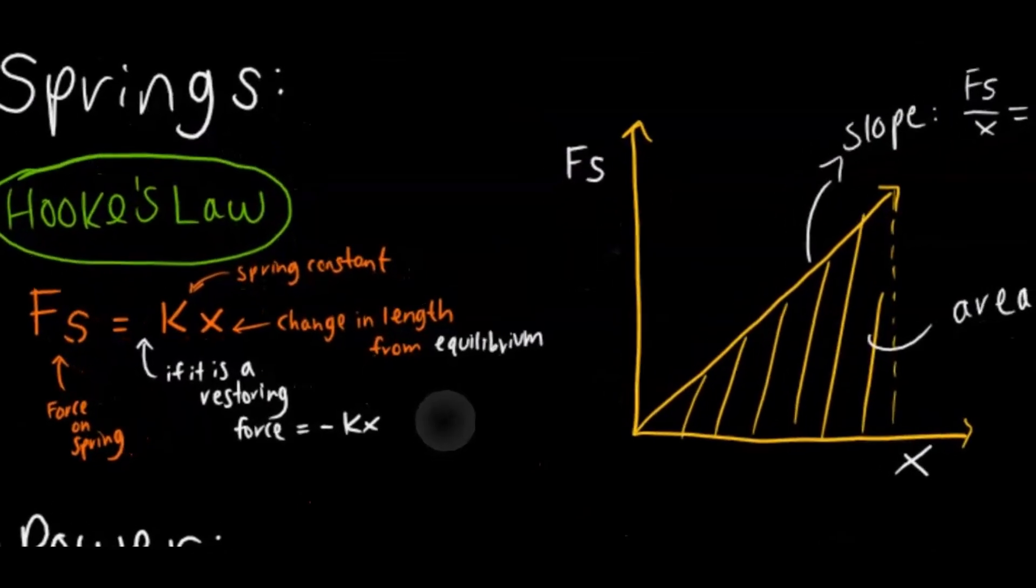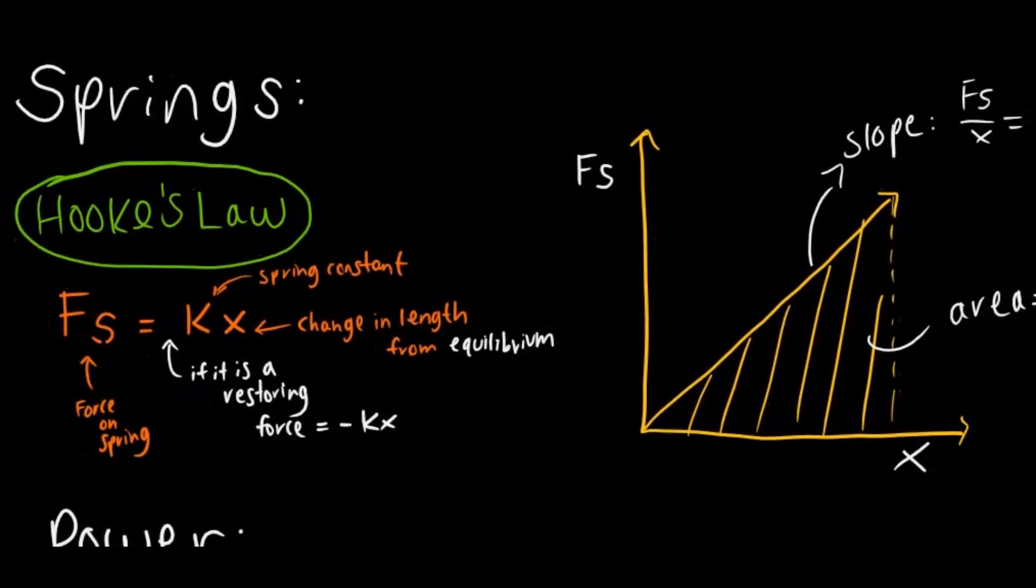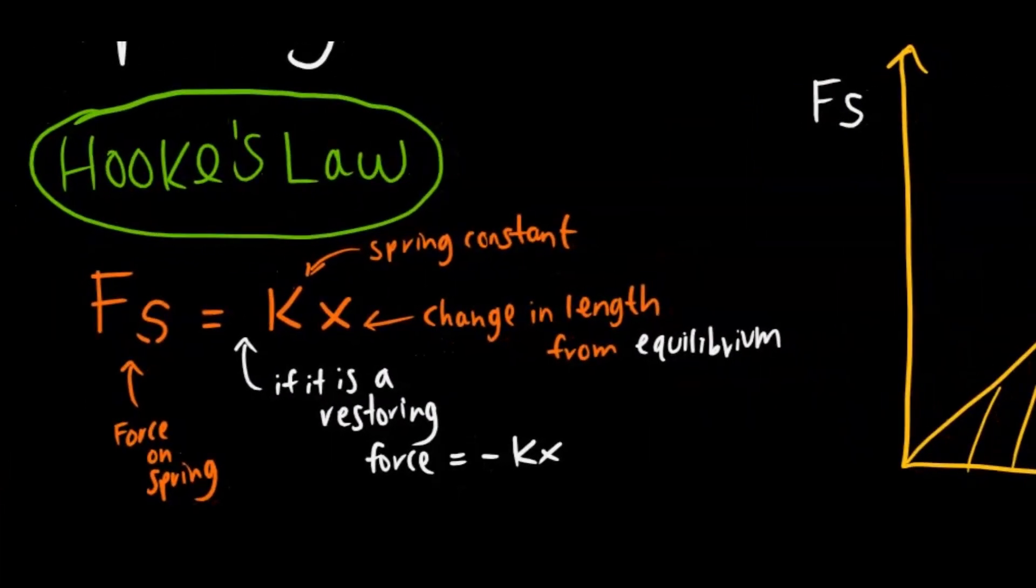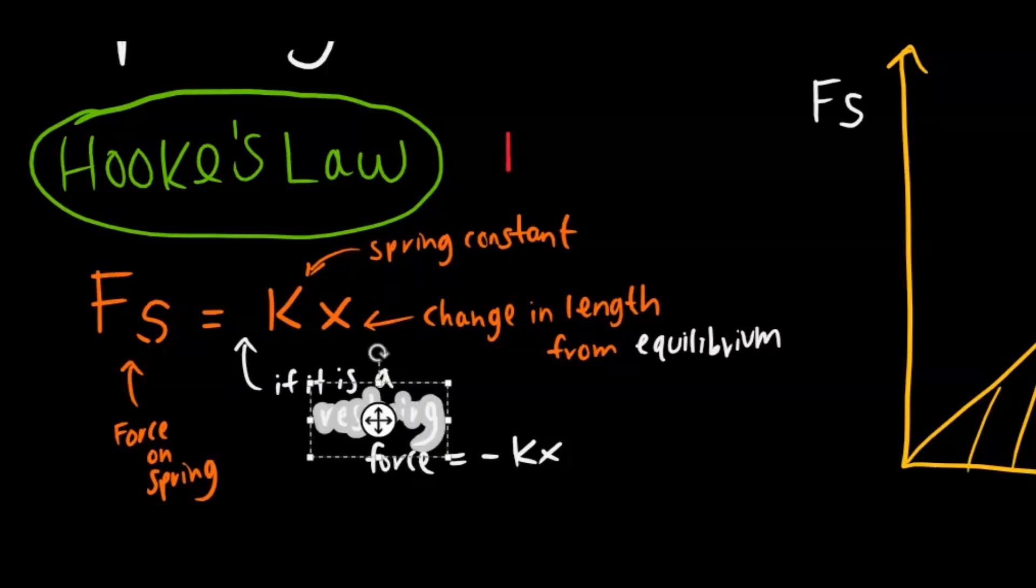So the final thing we want to touch upon is springs and then we'll get to power. So for springs, there's two things you want to know, and that is Hooke's law and the spring potential energy equation. So Hooke's law states that the force on the spring is equivalent to the spring constant, which is a constant force. And it's just a measure of how strong the spring is times the change in length from the equilibrium position. So that is when it's not stretched. Something to note here is that when it's oscillating in simple harmonic motion or something, if it's the restoring force, it's going to be negative KX instead of just KX. Because if you think about it, I should draw this out.